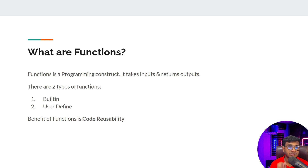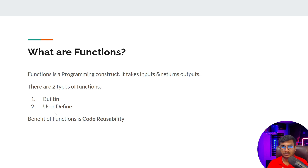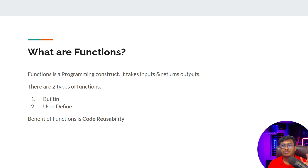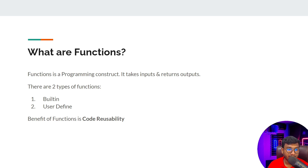There are two types of functions available inside Python: built-in functions and user-defined functions. We have already learned about built-in functions. Now we'll learn how we can define our own function — this is called a user-defined function. For example, if you want to implement a Facebook application, you can create your own login function, sign-up function, profile creation function, post function, and so on. The main benefit of functions is code reusability — you can reuse that particular code again and again.